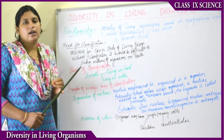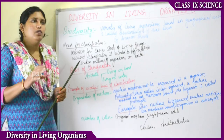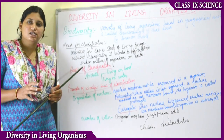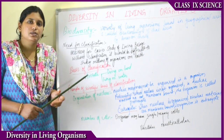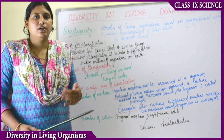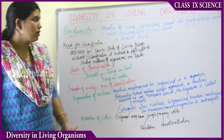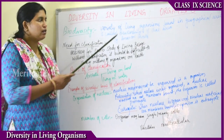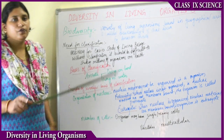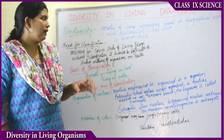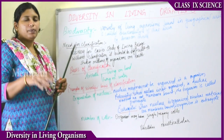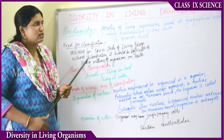In human beings also, your height is different from your friend's height and the length of your hands and legs differ from those of your friends. So there must be some fundamental classification — some basis to classify all organisms into groups using specific features. Biodiversity is the variety of living organisms found in a particular geographical area.